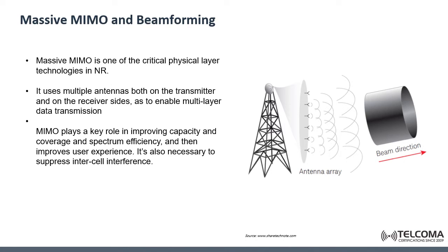One of the drawbacks of millimeter wave is that signals are easily blocked by objects and tend to be weakened over long distances. Massive MIMO and beamforming can help by focusing the signal in a concentrated beam that points only in the direction of the user, rather than broadcasting in many directions at once.